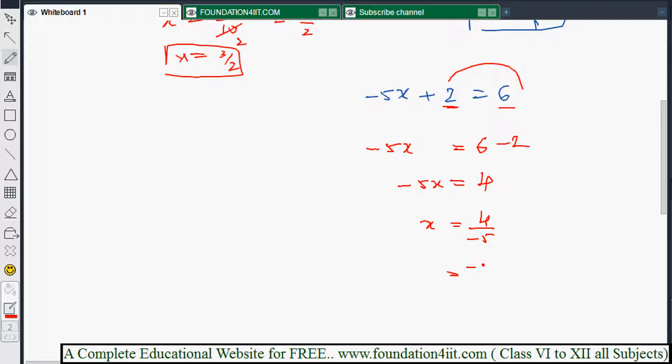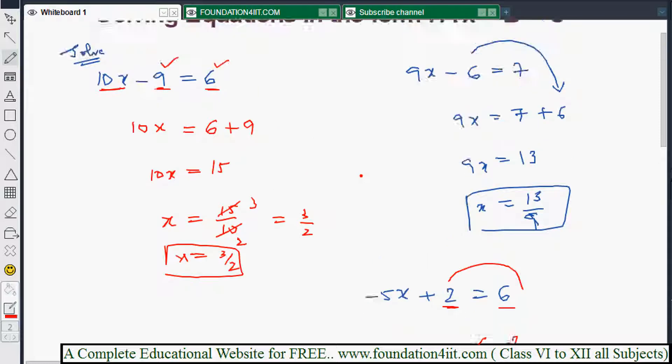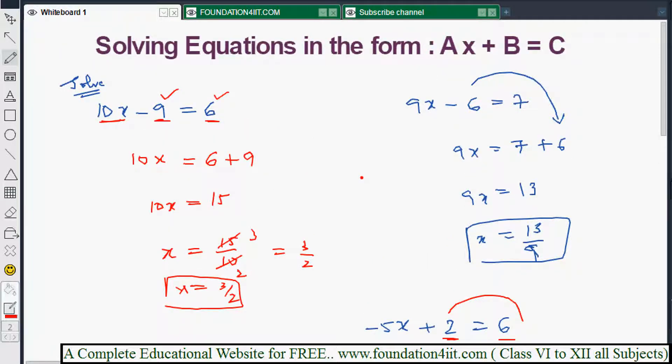x equals 4 by minus 5. Generally the negative sign we write for the numerator, so minus 4 by 5 is the value of x. This is the way we can solve any equations in the form of ax plus b equals c - a variable term, a number, and another number. Take the numerals to one side and solve using previous methods.